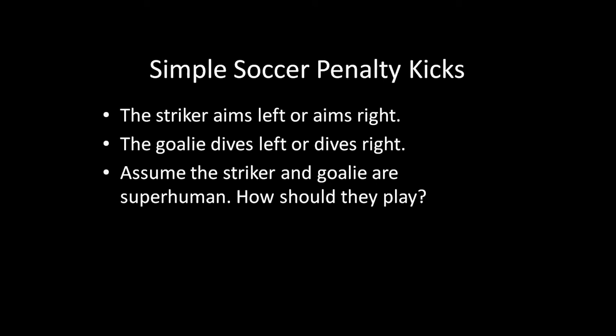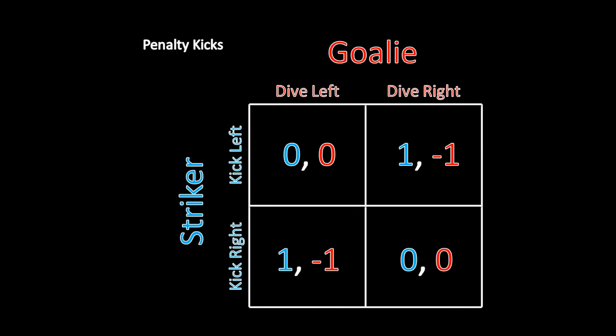We're going to look at a very simple version of this in terms of payoffs. We're going to imagine that both the striker and the goalie are superhuman. If the goalie dives in the correct direction, he'll definitely stop the shot. And if the striker kicks in the opposite direction from where the goalie is diving, the striker will never miss. The striker can either kick left or kick right; the goalie can either dive left or dive right. If they go in the same direction, the shot is stopped and no goal is scored — zeros in those cases. And if the striker kicks in a direction where the goalie isn't going, the striker scores a goal and the goalie gives up a goal.